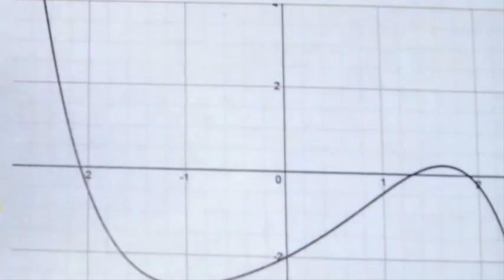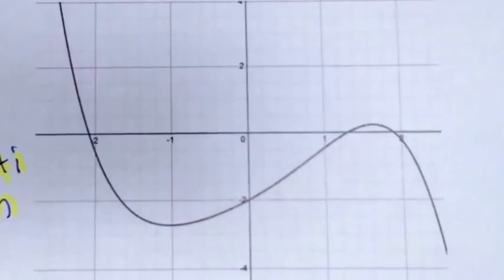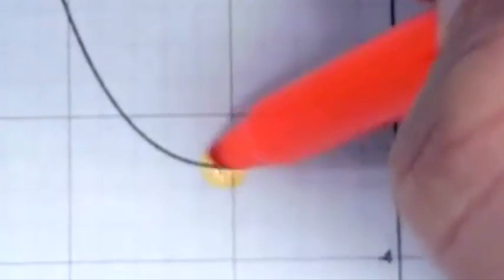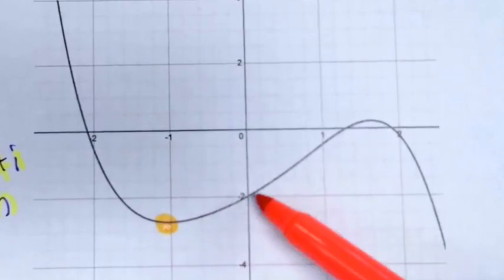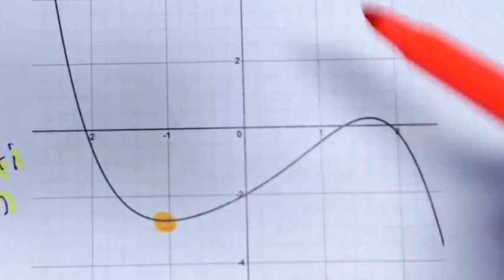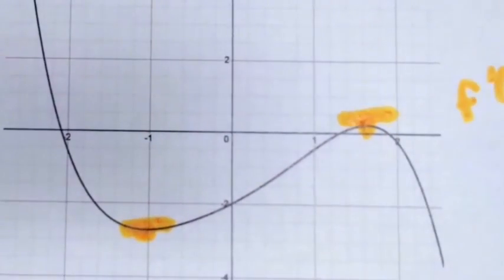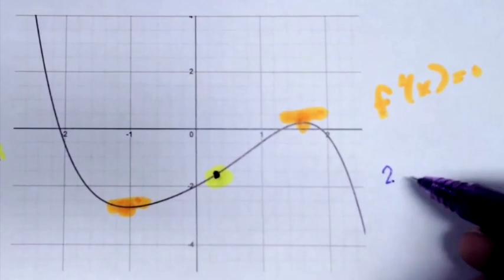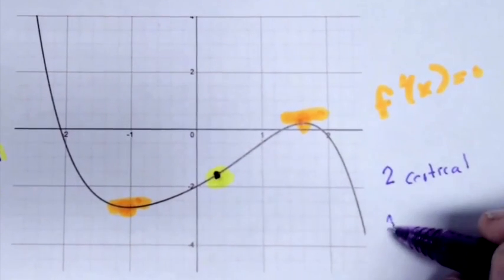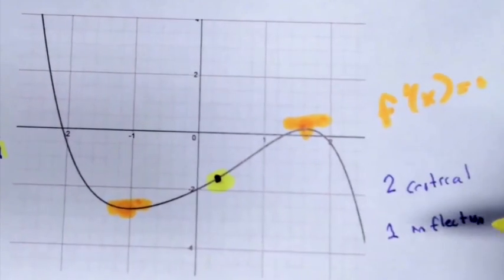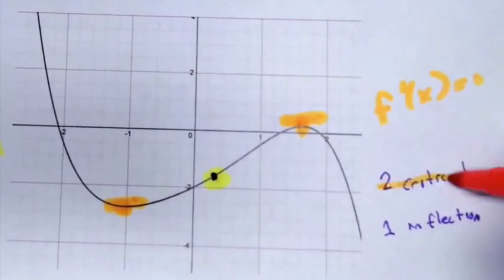Let's do the same thing for this next curve to the right, which is kind of fun. Stop me when I get to a critical point here. And stop me when I get to a critical point. Both of those are critical points where f prime of x is equal to zero in this instance. So this curve has two critical points and one inflection point. Critical points are in orange, inflection points are in yellow.